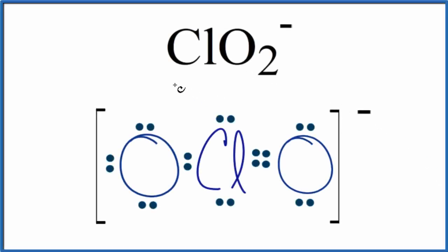In this video we'll look at the resonance structures for ClO2 minus. This is the chlorite ion.